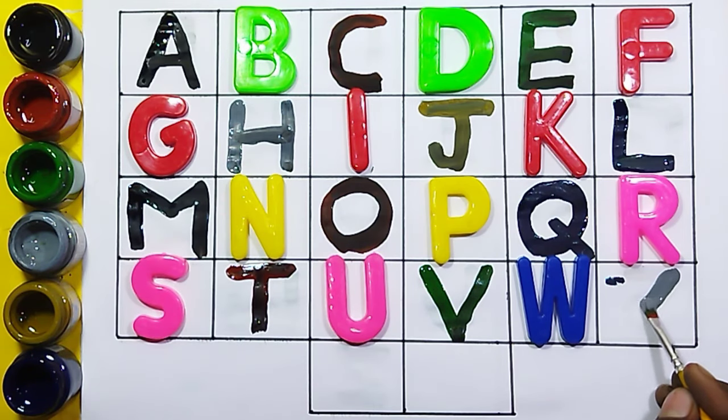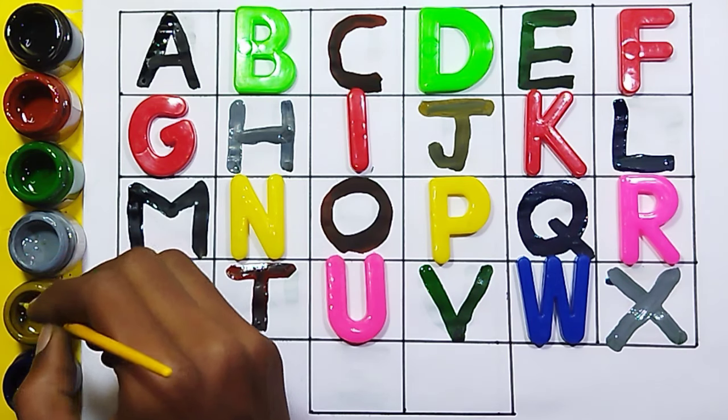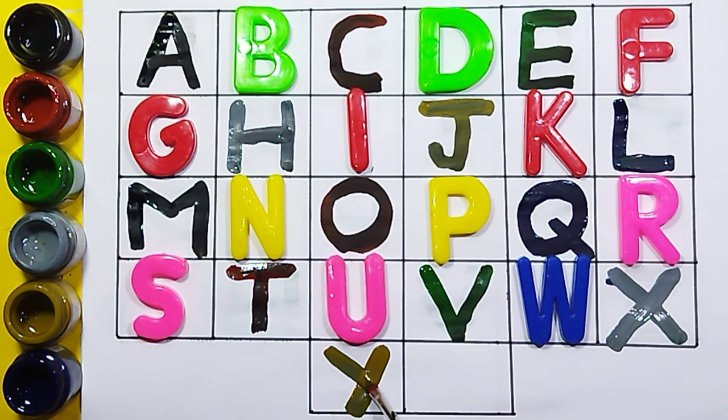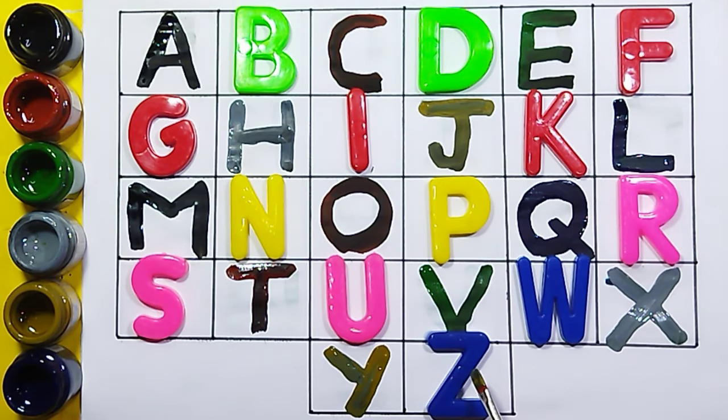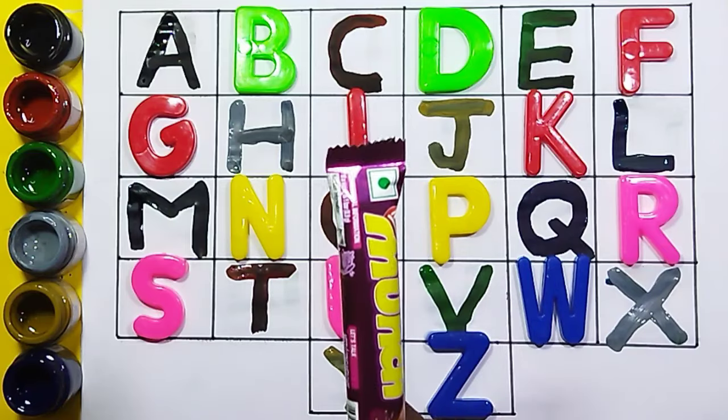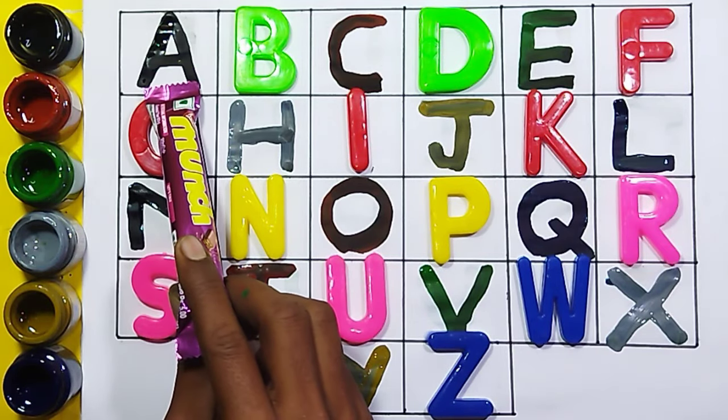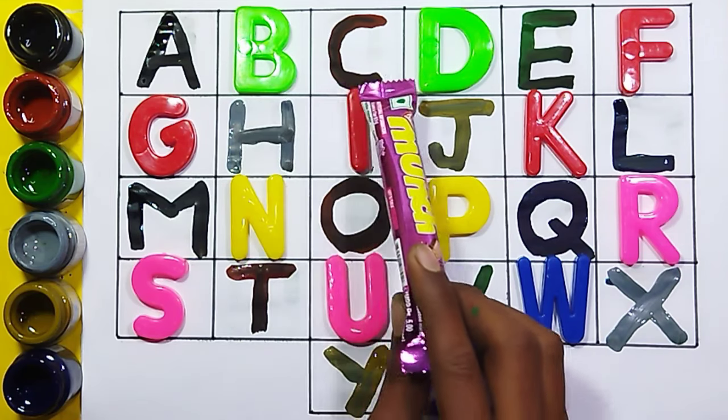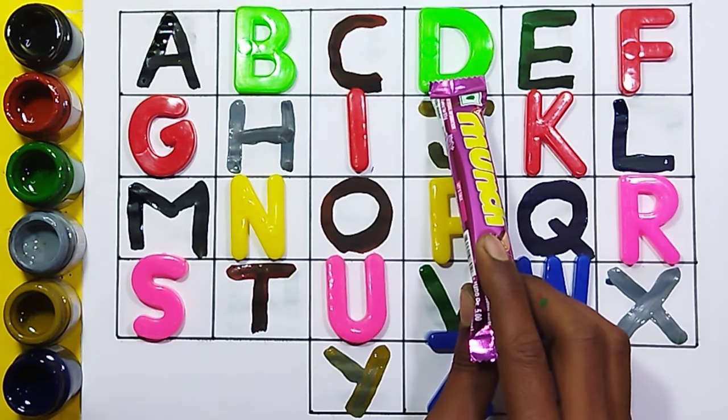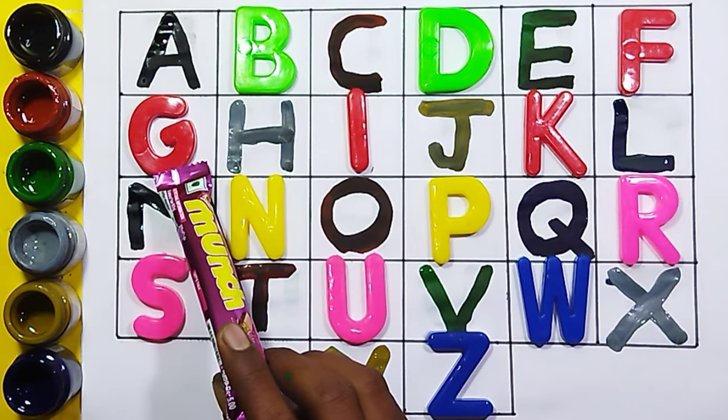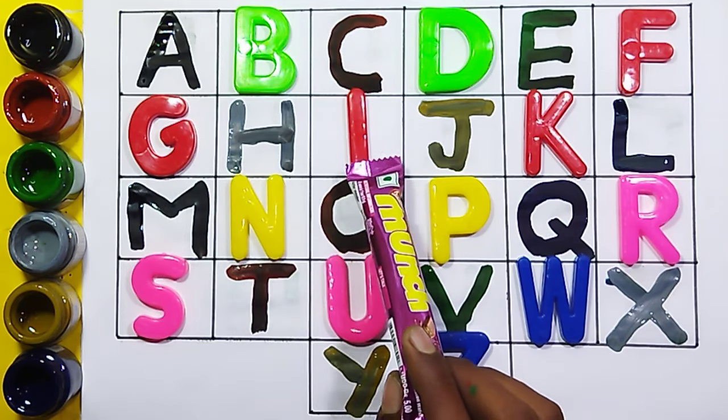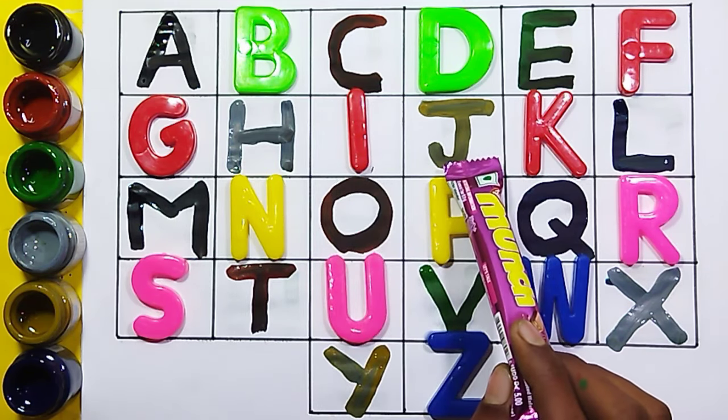Now let's recite all the letters together. A for apple, B for ball, C for cat, D for dog, E for elephant, F for fish, G for crabs, H for hand, I for ice cream, J for joker.